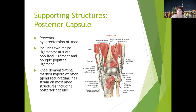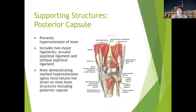It's interesting to observe knee alignment in people — some have hyperextended knees, some have slightly bent knees. Being outside of normal alignment does not necessarily mean something is wrong; it just means they are outside normal alignment. It might cause problems later on, but different alignment does not automatically indicate pathology.